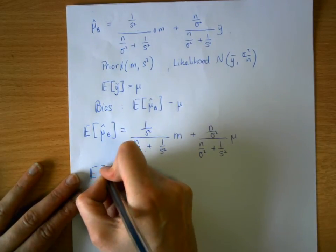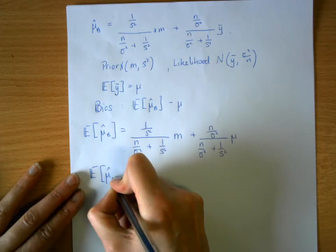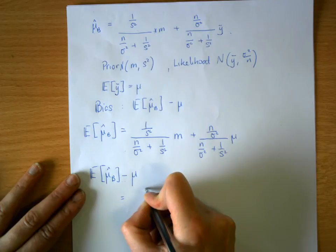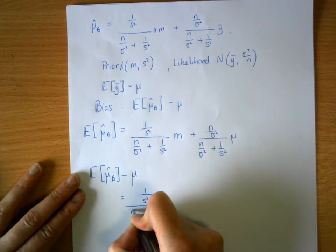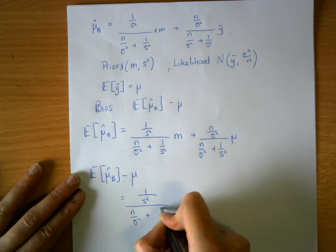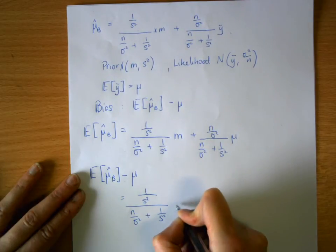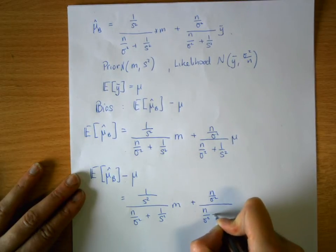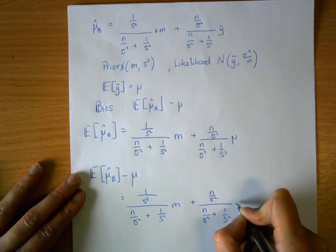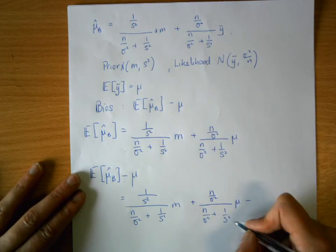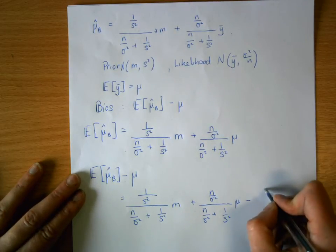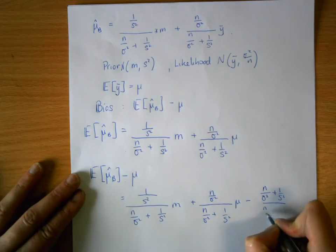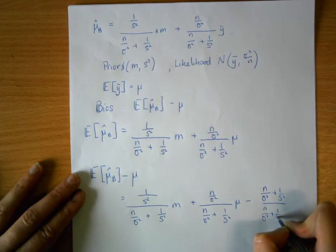The bias is the expected value of our estimator minus the true mean. The expected value of mu-hat B is (1/s²) divided by (n/σ² + 1/s²) times m, plus (n/σ²) divided by (n/σ² + 1/s²) times mu, because the expected value of y-bar is mu. So the bias equals this expression minus mu, written with the same denominator (n/σ² + 1/s²) for simplicity.